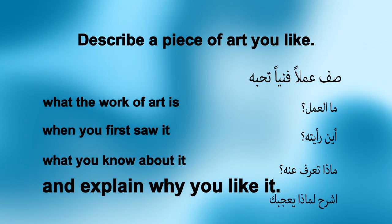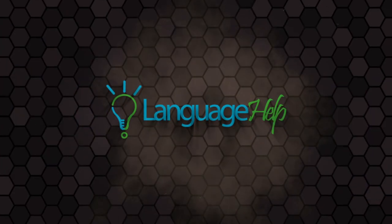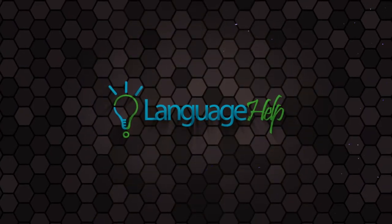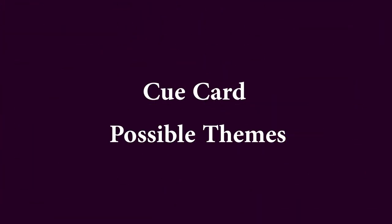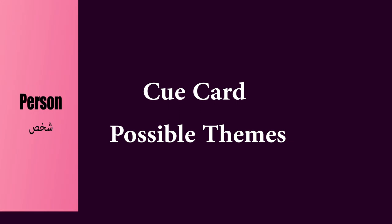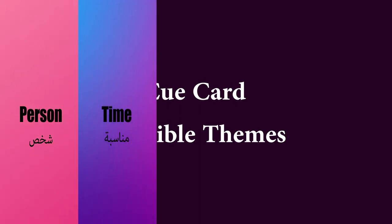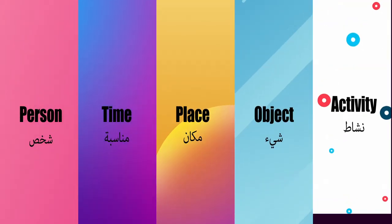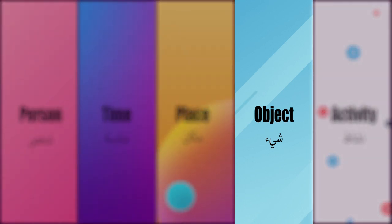This is language help and this is a discussion of a cue card. A cue card could ask you to describe a person, or describe a time or occasion, or describe a place, or describe an object, or describe an activity. Today's arts cue card is about an object.